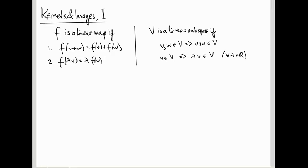A subspace is linear, or a subset is a linear subspace, if when you take two vectors in that subset and add them, you get another vector in the subset, and if you rescale a vector in the subset, you get another vector in the subset. So it's closed under addition and closed under rescaling.